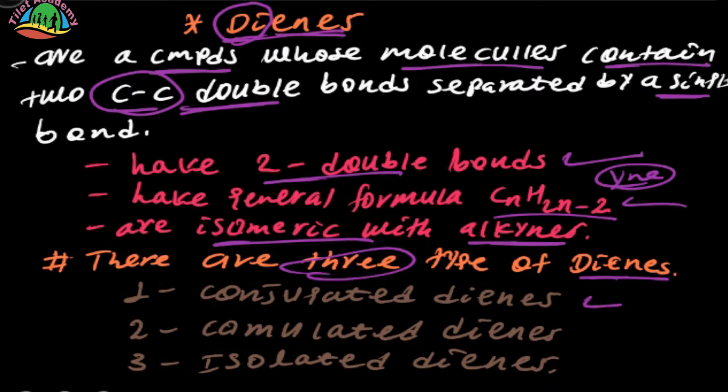There are three types of Dynes: Conjugated Dynes, Cumulated Dynes, and Isolated Dynes. Each type describes how the double bonds are arranged within the molecule.